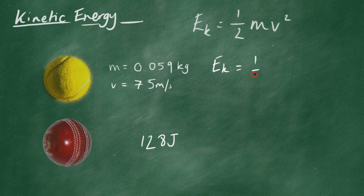So, a half times by the mass, 0.059, times 75, squared. How much kinetic energy is that?